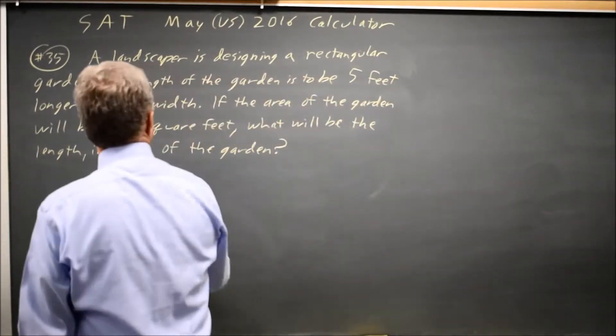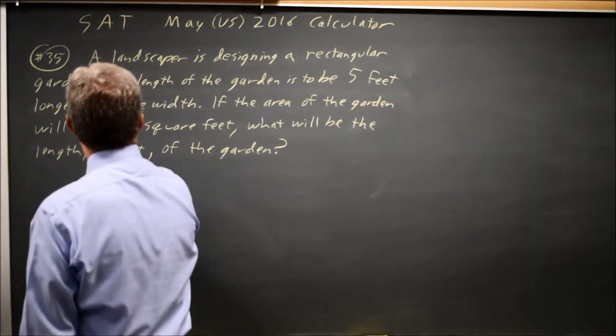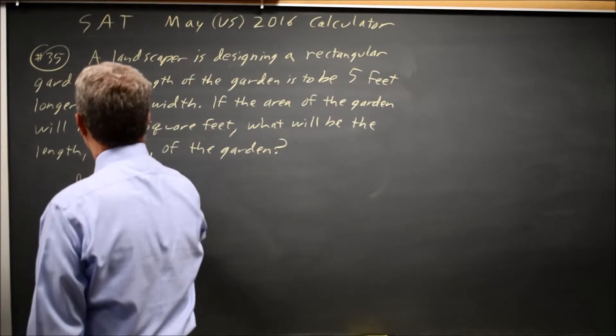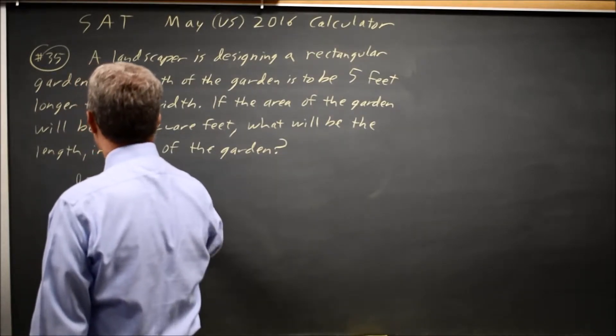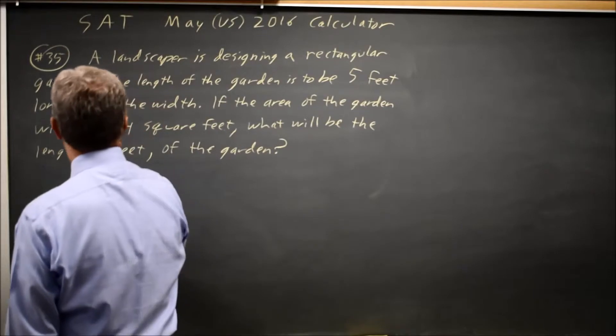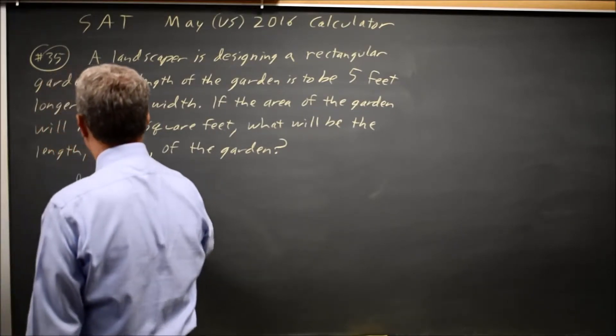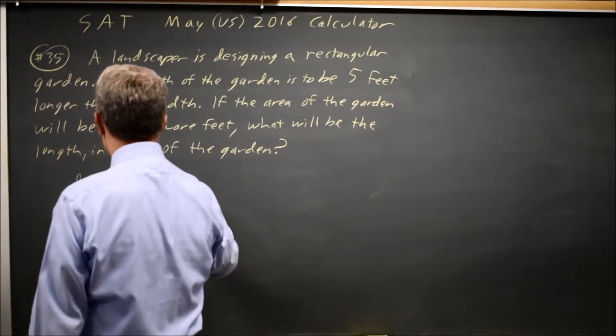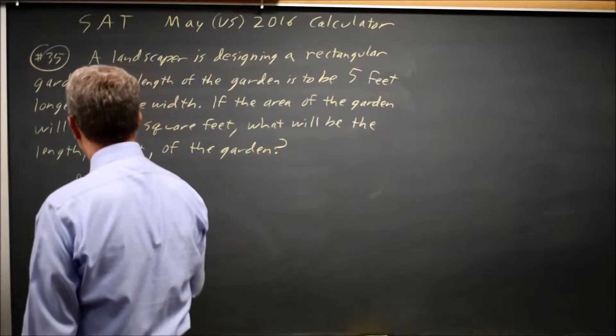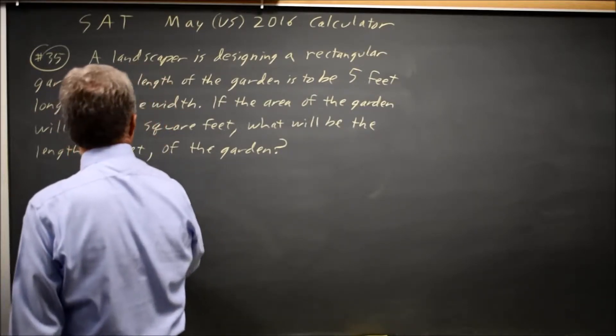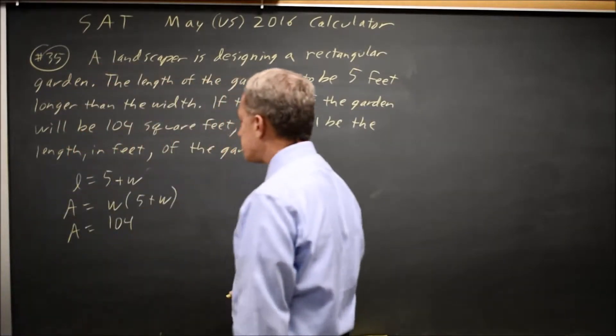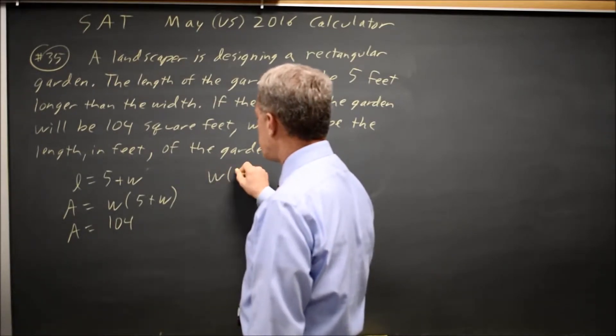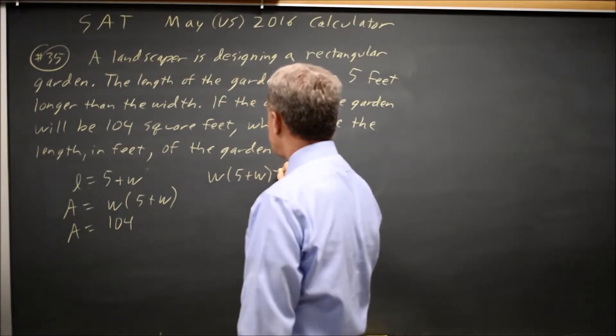So let's write an equation. The length is 5 more than the width. So I'm going to write the area as the width times 5 plus the width, and I also know the area is 104, so I'll set those two expressions equal. W times 5 plus W equals 104.